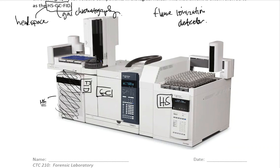If you do see a box on the left-hand side, it would be a hydrogen generator. The hydrogen generator supplies hydrogen gas for the FID, which requires hydrogen to operate. We normally don't like to keep hydrogen in large tanks because they are explosive, so instead we generate hydrogen as we need it — that is the purpose of the hydrogen generator.